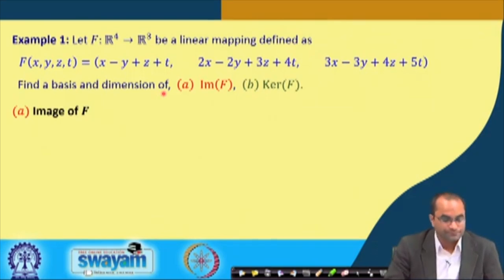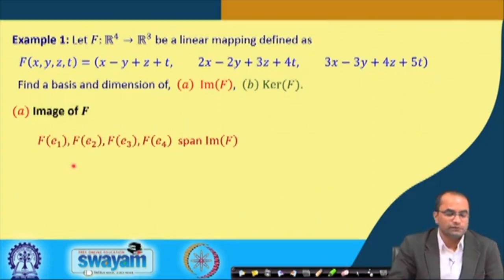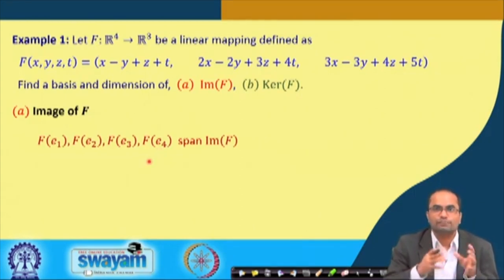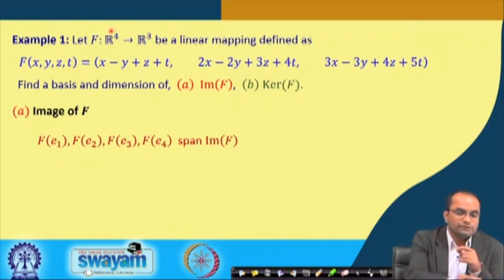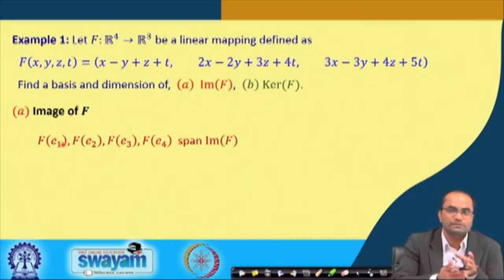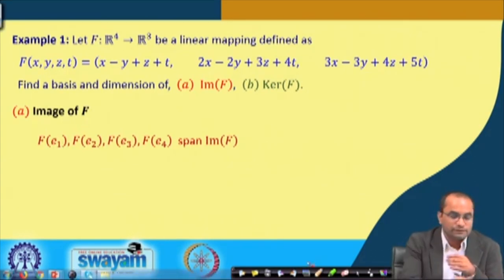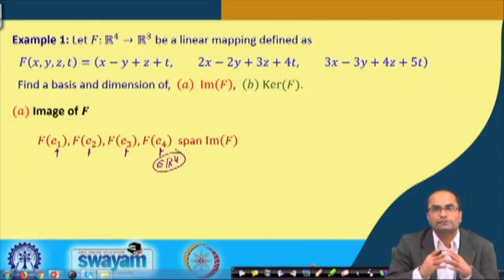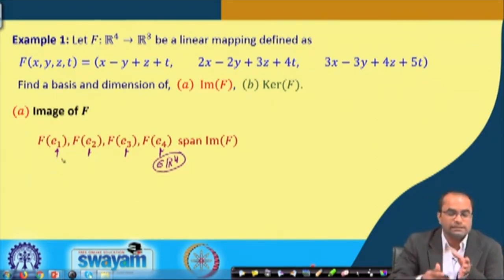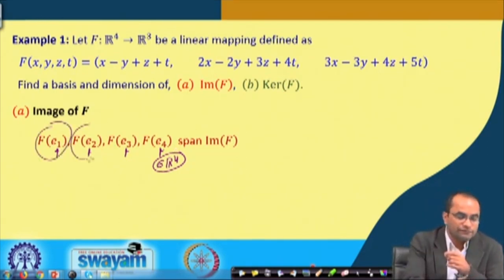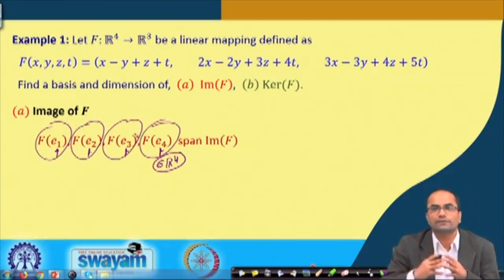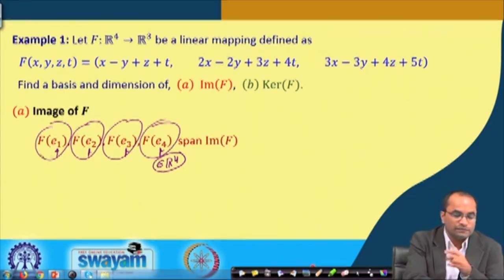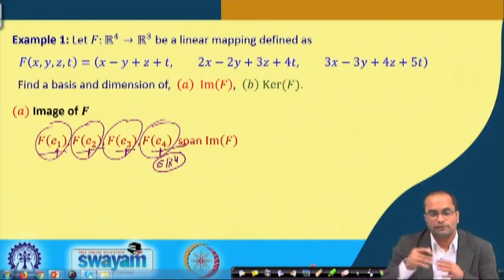For the image of f: from the previous lecture we know that if vectors span the vector space X, then their images span the image of f. We take the standard basis e1, e2, e3, e4 from R⁴, and by that theorem, f(e1), f(e2), f(e3), f(e4) — vectors in R³ — will span the image of this mapping f.